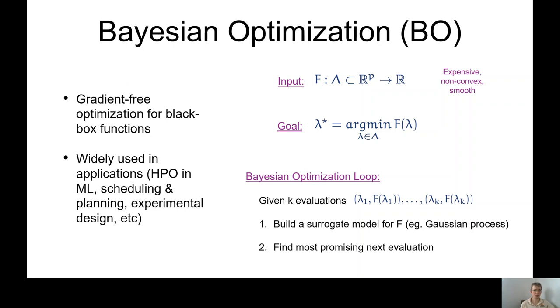The typical way Bayesian optimization is formalized is when you have an objective, a function f defined on some set of a high-dimensional Euclidean space and you assume that this function is expensive, non-convex and has some degree of regularity. Now, what you want to do is try to minimize this function by doing as few evaluations of f as possible, obviously because it's expensive to evaluate.